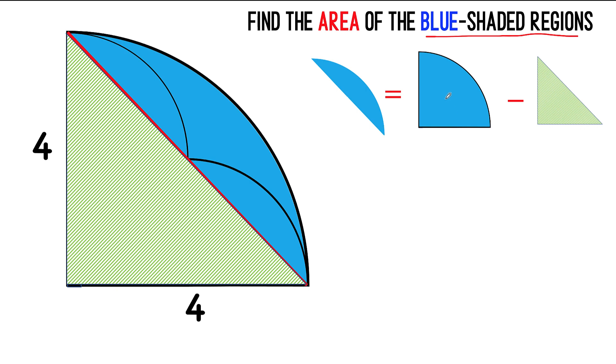And if we can find the area of the quarter circle, and we can find the area of this right triangle, then we have the answer to our problem. So let's do that.